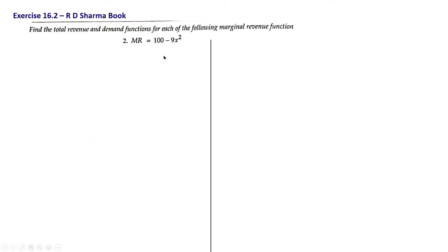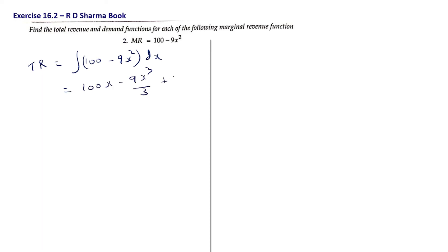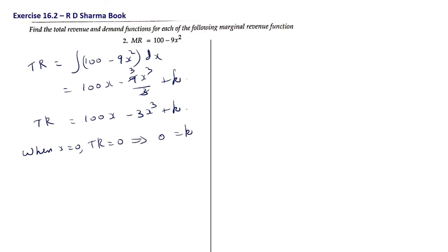Second question: MR = 100 - 9x². Total revenue = integral of (100 - 9x²) dx = 100x - 9x³/3 + k = 100x - 3x³ + k. When x = 0, TR = 0, so k = 0. Therefore TR = 100x - 3x³. The demand function is p = TR/x = 100 - 3x².